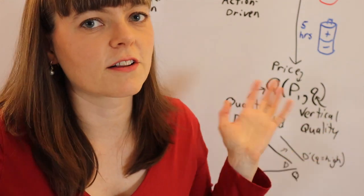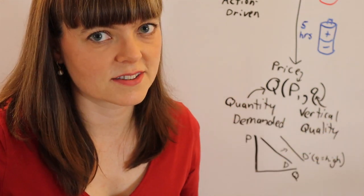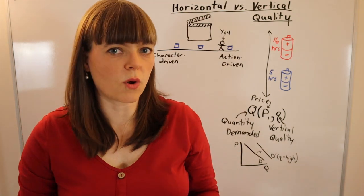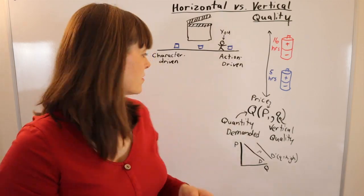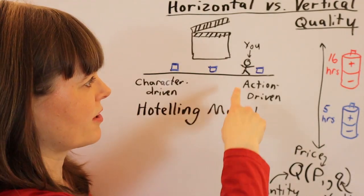That's the way to model vertical quality in economics. How do we model horizontal quality? Well, oftentimes economists will refer to the Hoteling model. Under the Hoteling model, you have an optimal preference.